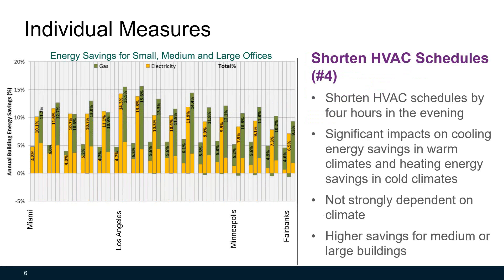The next individual measure is shortened HVAC schedules. In the simulation study, shortened HVAC schedules by four hours can save energy from 10 to 15 percent, with higher numbers for medium and large offices compared to small offices. There is a significant impact on cooling energy savings in warm climates and heating energy in cold climates. This is not strongly dependent on climate, and higher energy savings can be achieved for medium or large buildings.